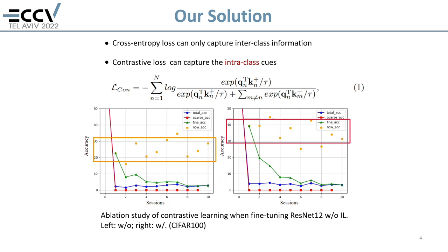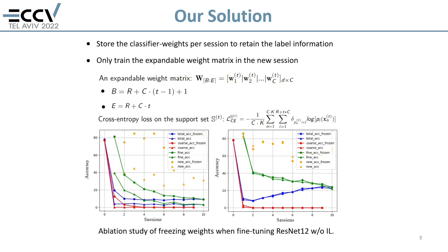As shown in the figure, when fine-tuning ResNet-12 with contrastive loss, the accuracy of fine classes is much higher than straightforward training on coarse labels. As past samples are not retained, we store the classifier weights per session to implicitly retain the label information, and we only train the augmented weight matrix in the new session.